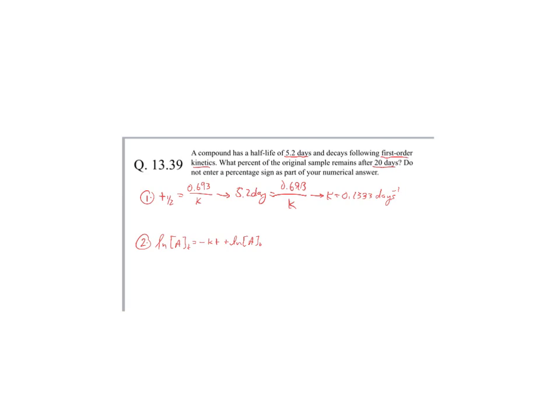So just to make our life easy, let's just say the initial concentration is 1. Because ultimately we're looking for a percentage of how much of the sample remains, so it's very easy to convert 1 into a percent, thinking of it as 100, and it's also going to make our math a little bit easier.